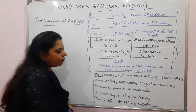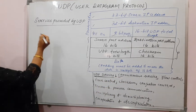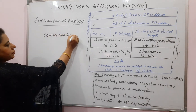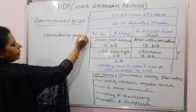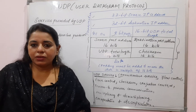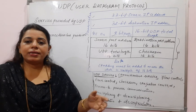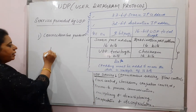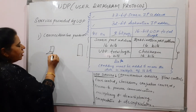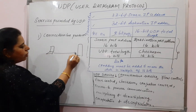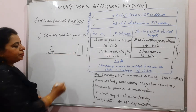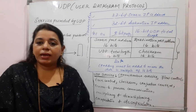The first one in the list is that UDP is a connectionless protocol. This is one of the features or services. Connectionless means there is no connection established between the sender and the receiver. The sender directly starts sending the data to the receiver without establishing a connection.